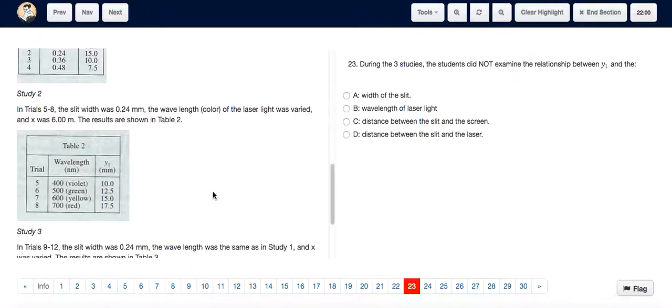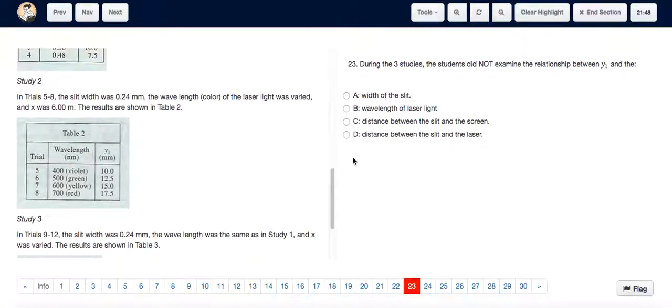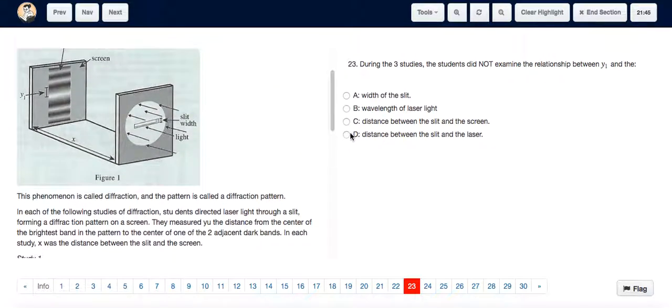The wavelength of the laser light was measured in study 2. The distance between the slit and the screen was x and was kept at 6 meters in study 2. So that was also studied. So the only thing that was not studied was the distance between the slit and the laser. So the answer is D.